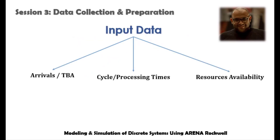Input data for any discrete system could be categorized in different forms. It could be the inter-arrival time, or the time between arrivals of the entities at any system. For example, we might have a clinic system where entities enter with random time behaviors. Or we could have a factory with different machines having different cycle times — this is also considered input data. The same applies to resource availabilities.